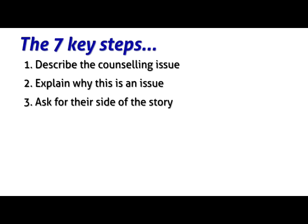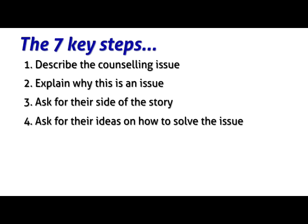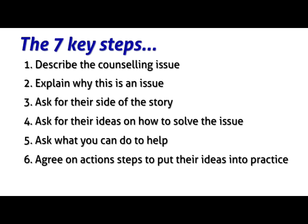The third step is to ask for their side of the story. Find out the reason for their present performance and make it clear that you understand their side of the story. This doesn't mean that you have to agree with their side of the story, but simply that you have truly heard and understood what they're saying. Next, ask for their ideas on how to solve the issue or improve their performance. The fifth step is to ask what you can do to help them implement these ideas. And then the sixth step is to agree action steps to put their ideas into practice. These may be mutual actions taken by both you and the individual you're counselling.